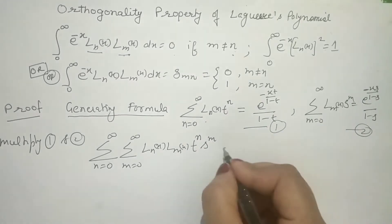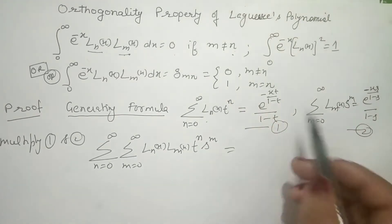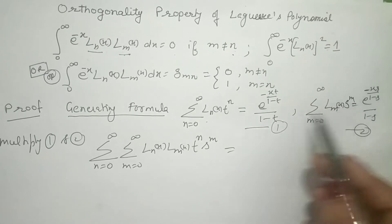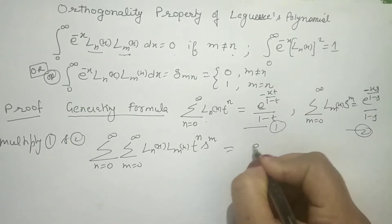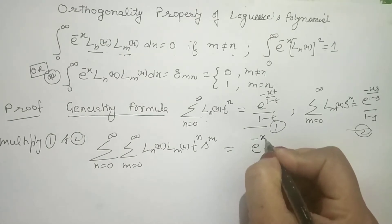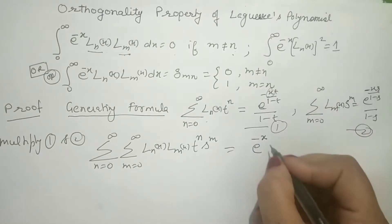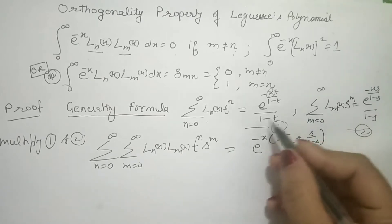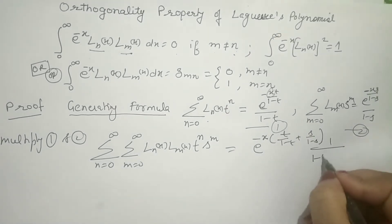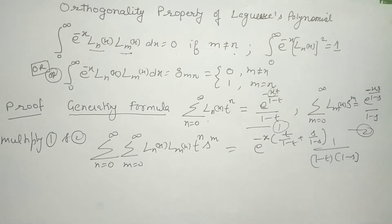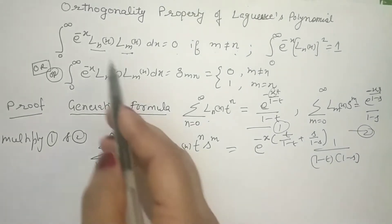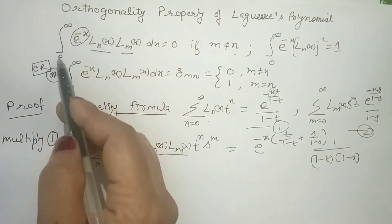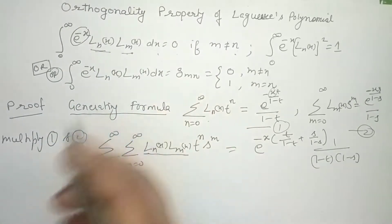Multiplying the two generating formulas gives us this expression. On the right-hand side, when we multiply e^(something) by e^(something), their powers add. So we get e^(-x) as a common factor since x exists in both terms. The result is t/(1-t) + s/(1-s) in the exponent. When we multiply both sides by e^(-x) and integrate from 0 to infinity with respect to x, the denominator becomes (1-t)(1-s).